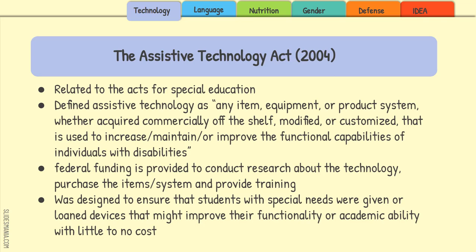Somewhat related to special education but moving into technology is the Assistive Technology Act of 2004. It defines assistive technology as any item, equipment, or product system — whether commercially off-the-shelf or modified and customized — that can increase, maintain, or improve the functional capabilities of students with disabilities.